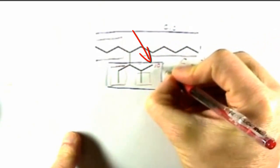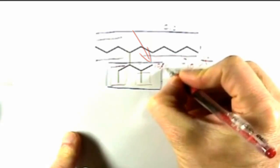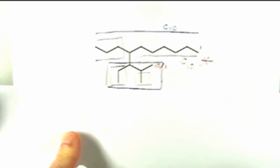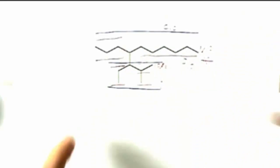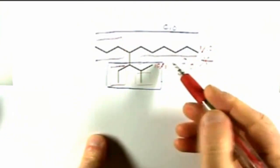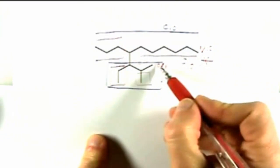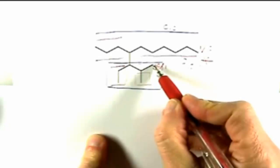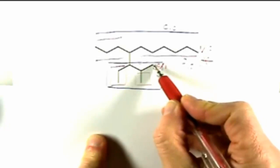Or we could start at the atom we just numbered 10, call that one 1, and number around the opposite direction to get to 10 at the upper right. So those are your two numbering directions. If we do that, let's say we take the second choice first. So we're going to start at the lower carbon. So that's carbons 1,